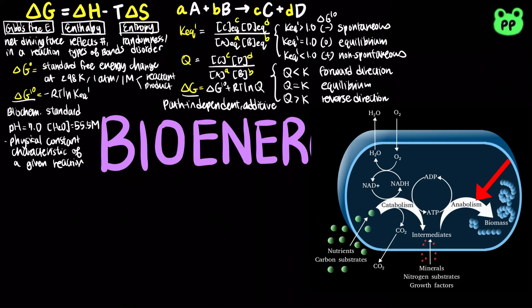Most energy coupling in cells is mediated by ATP, which stands for adenosine triphosphate. ATP is composed of a nitrogenous base adenine, a sugar ribose, and three phosphate groups.